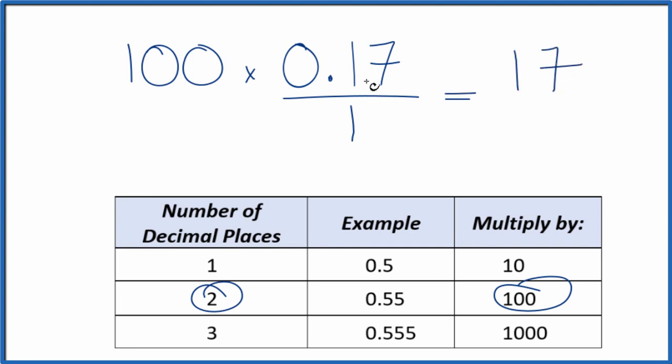But we can't just multiply the numerator by 100 here. We also have to multiply the denominator. That's because 100 divided by 100 is 1. So we're just multiplying by 1. We don't change the value, just the way it's written.